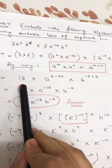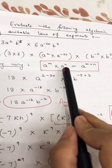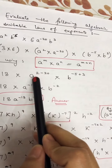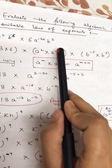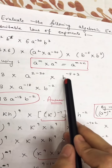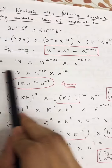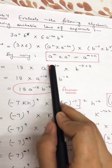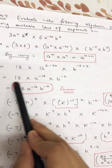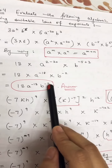3 times 6 is 18. For the a bracket, we apply: a raised to power m multiplied by a raised to power n equals a raised to power m plus n. Powers are 2 and minus 20, so plus sign removes and minus 20 gives: 2 minus 20 is minus 18. For b bracket: minus 5 plus 3 gives minus 2. Removing the multiplication signs, the answer is 18 a raised to power minus 18, b raised to power minus 2.